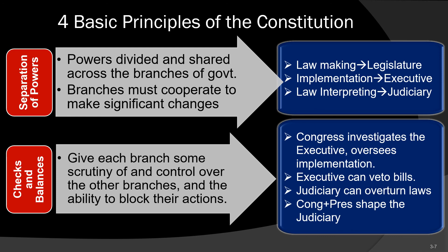If laws that get passed violate the Constitution, the judiciary can say you can't do that and overturn the law. And finally, Congress and the President have the ability to shape what the judiciary looks like because they choose who the judges are — they can select people matching their ideology or constitutional interpretation. The president nominates federal judges, and then the Senate must vote to approve them, so it's a joint action between the two branches.